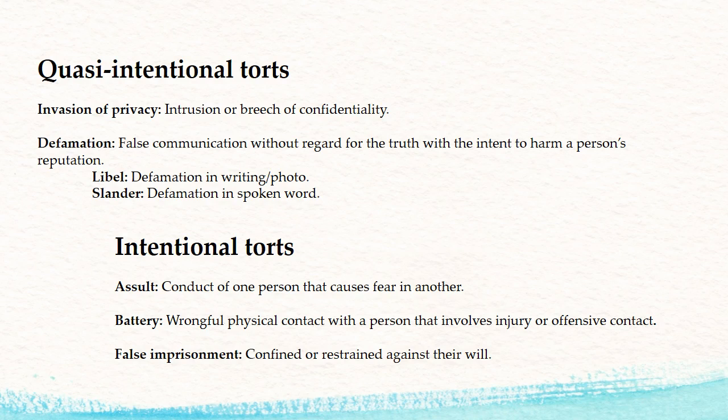Defamation is false communication with disregard for the truth and with the intent to harm a person's reputation. There are two types: libel and slander. Libel is defamation in writing or photograph; slander is defamation in spoken word. A way to remember the difference: think of libel having lines, like lines on a piece of paper — it's written. Slander — the 'S' is for spoken word.